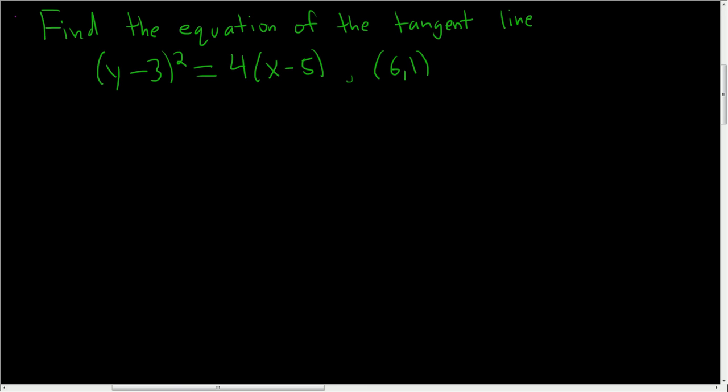So we have to find the equation of the tangent line to the graph of this function at, well, it's not a function actually, to this graph at 6, 1. This is actually a parabola that opens right, so it's not a function, it fails the vertical line test.